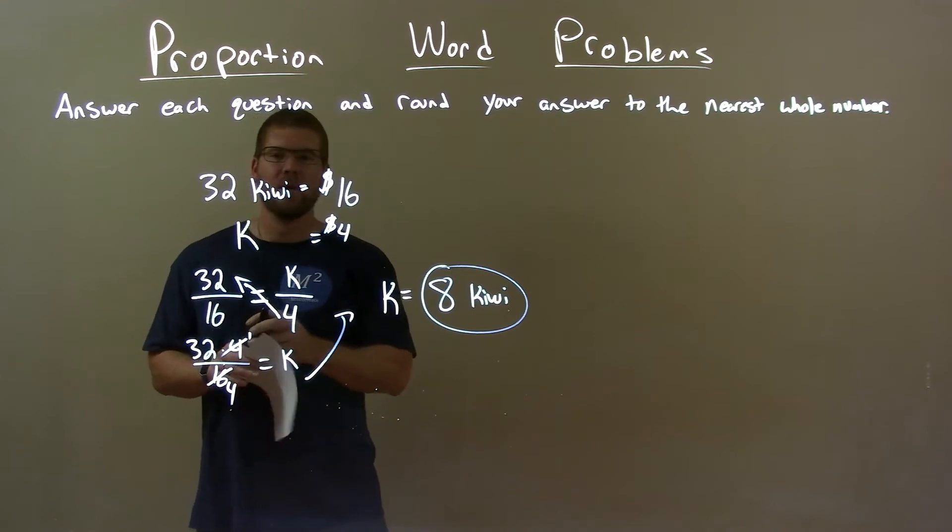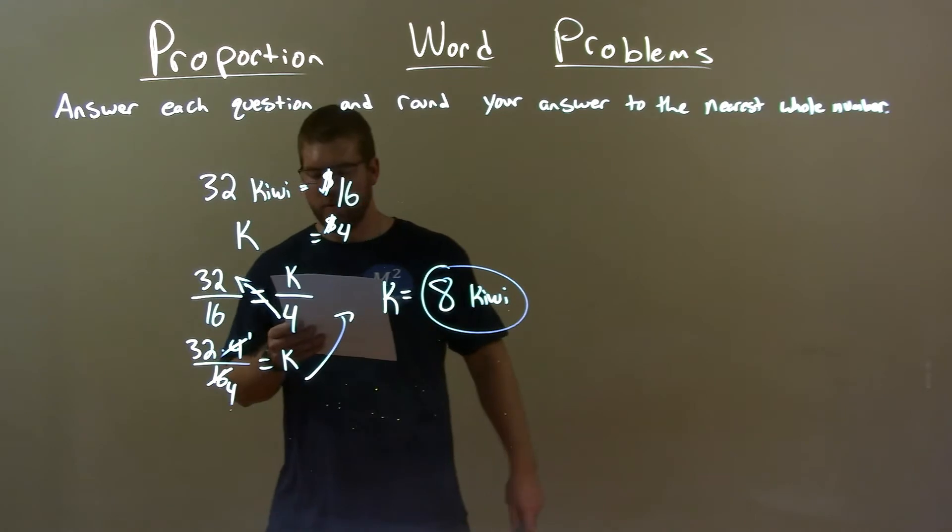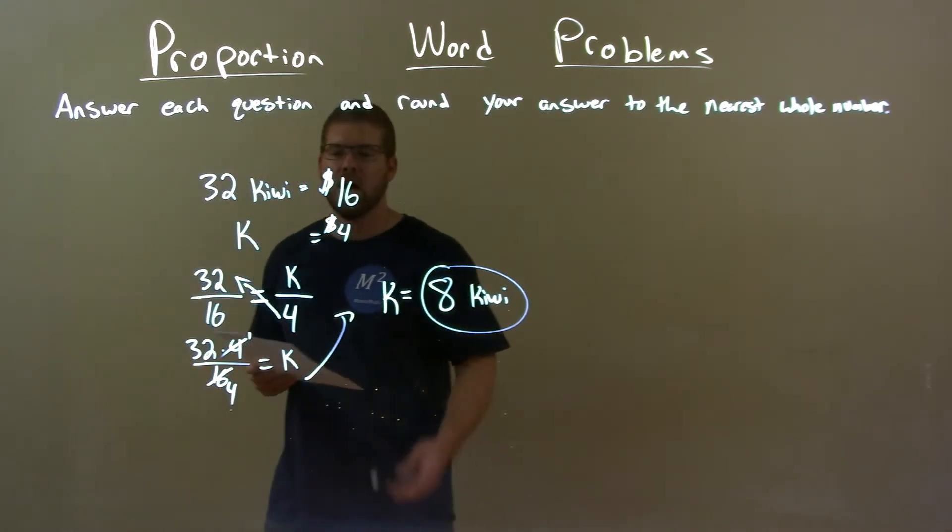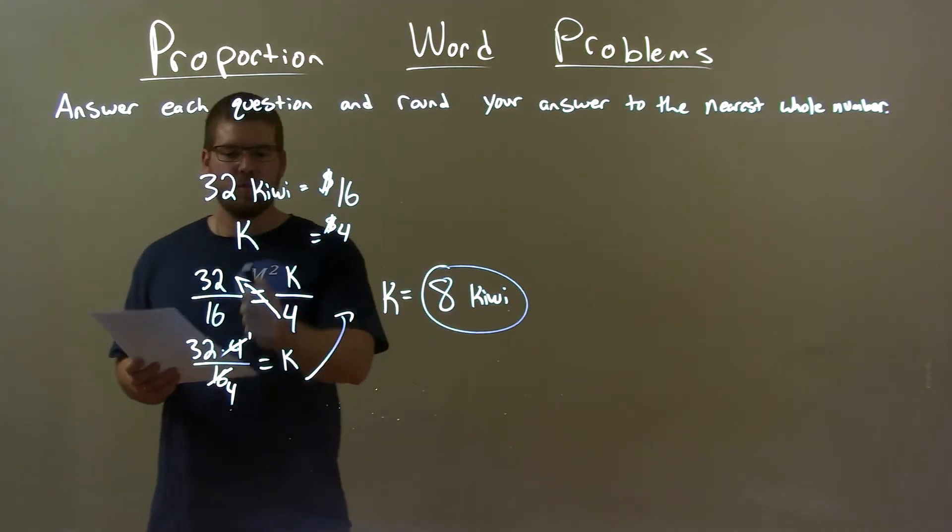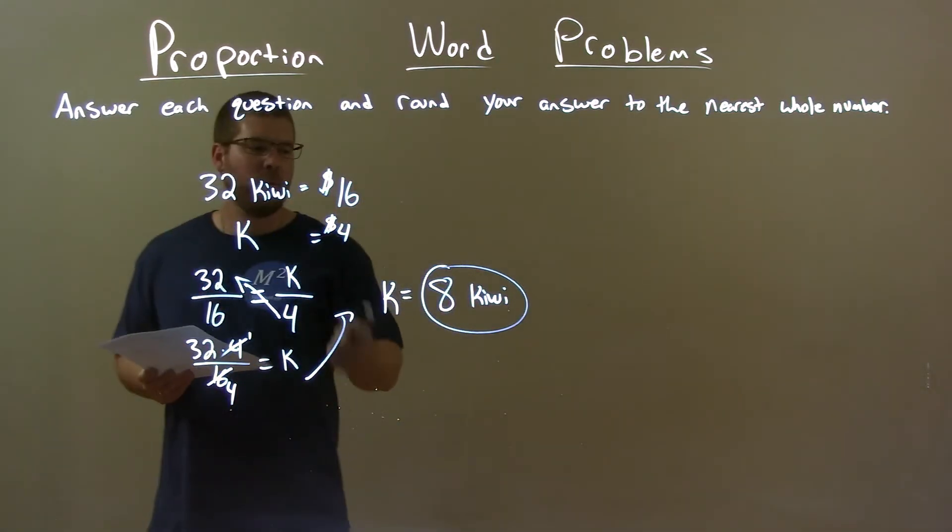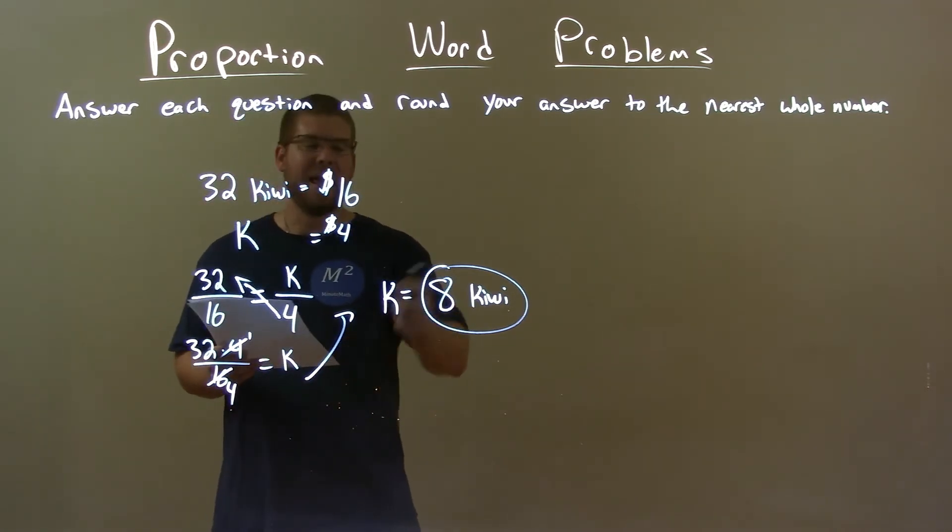So quick recap. We're given Jasmine buying 32 kiwis for $16. How many kiwi can Lisa buy if she has $4? Well, we set up our proportion, 32 over 16 equals k over 4, and we solve that proportion for k. We end up getting k being 8, and so for $4, Lisa can buy 8 kiwi.